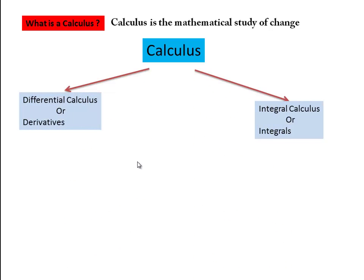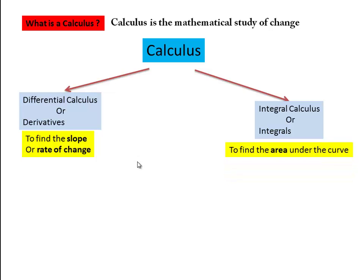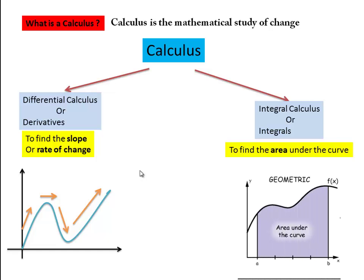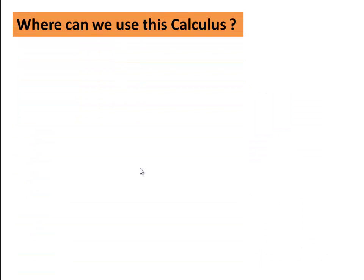Calculus has two main branches: differential calculus, or derivatives, and integral calculus, or integrals. Differential calculus is used to find the slope or instantaneous rate of change. Integral calculus is used to find the area under the curve. So differential calculus helps us find how much a graph is increasing or decreasing, and integral calculus helps us find the area under the curve.